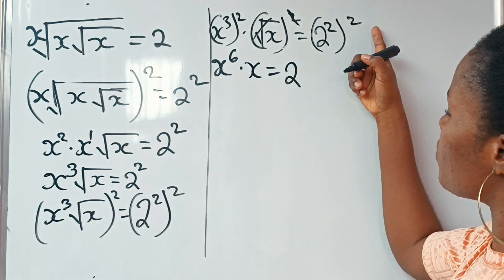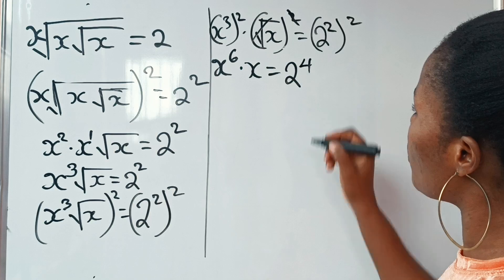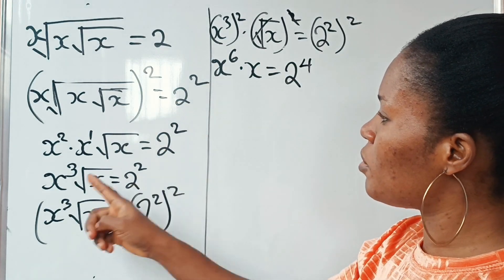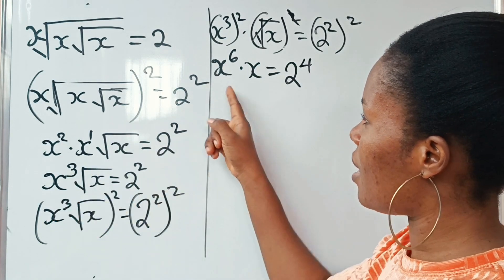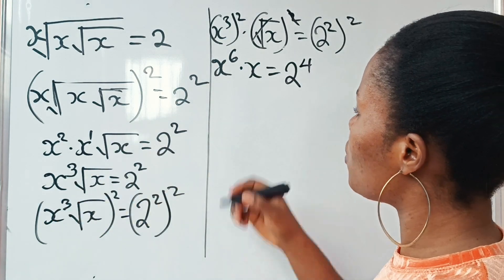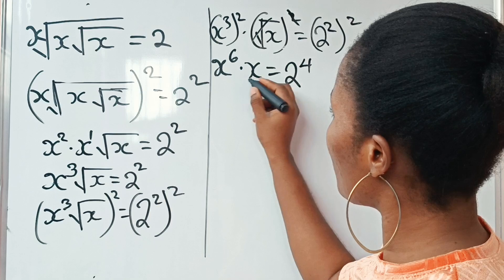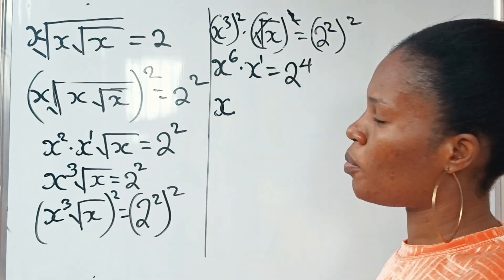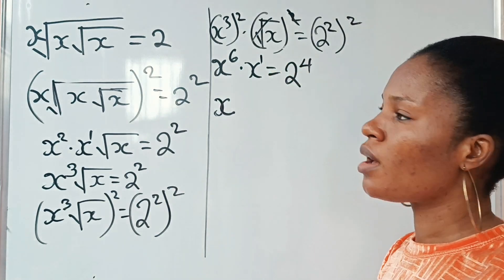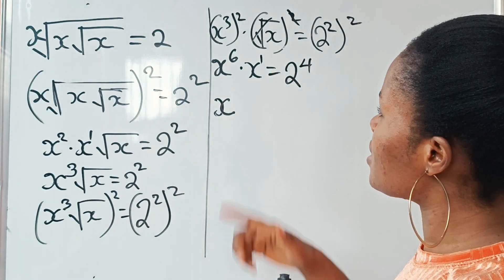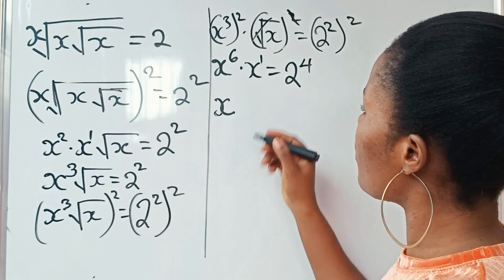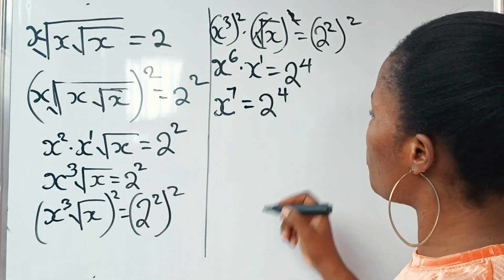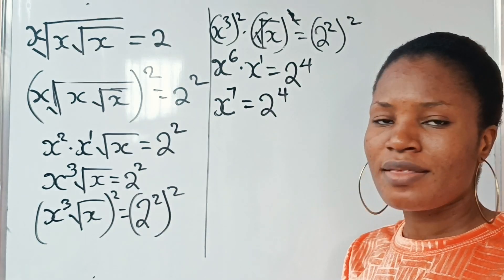Now 2 squared times 2 squared gives us 2 to the power of 4. So applying the same law of indices, we pick one base and add the powers: x to the power of 6 times x to the power of 1 gives us x to the power of 7, is equal to 2 to the power of 4.